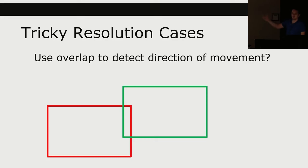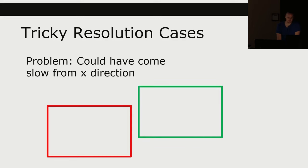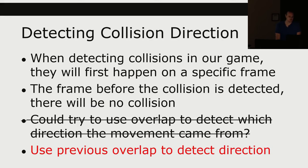If it was moving really fast, it could have come from the top. If it was moving slower, it could have come from the right — it could have come from the y direction if going fast, or from the x direction if going slow. So we can't just use the overlap to detect which direction it came from; we've got to use some other information. I'm going to call this the previous overlap.